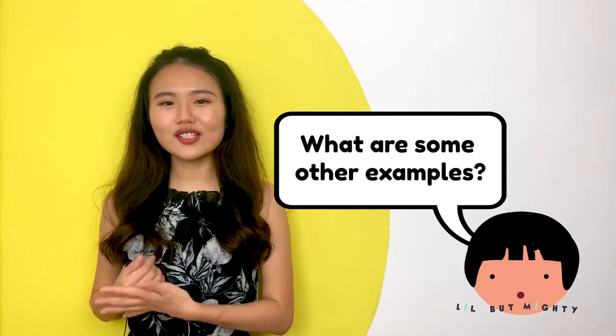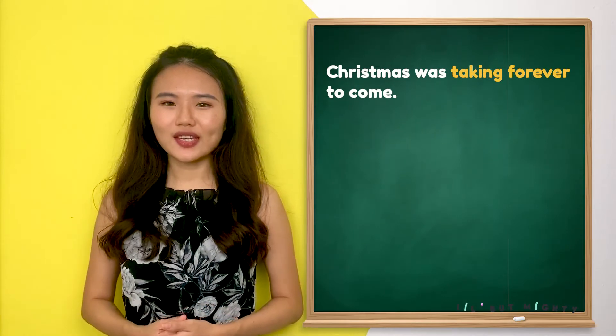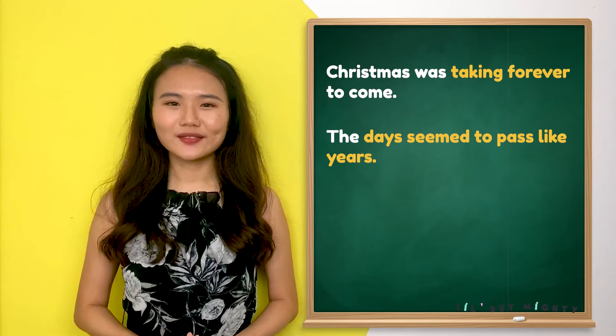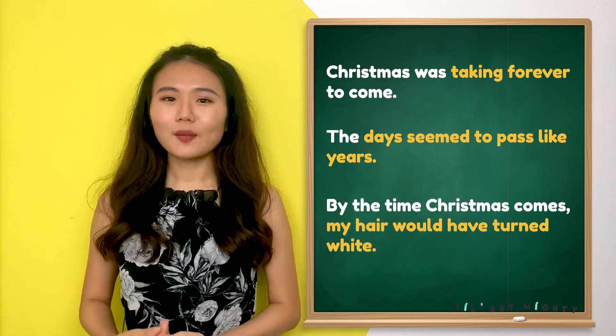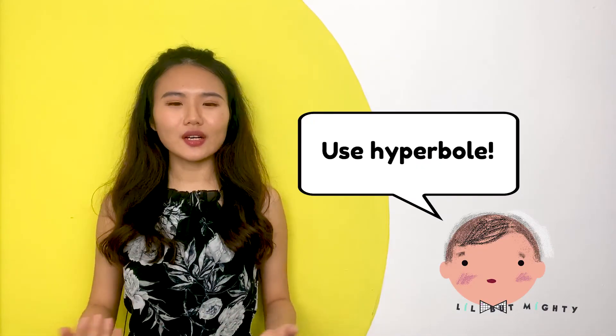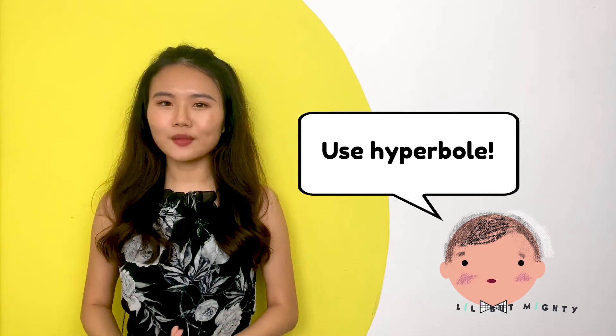Aside from the example I just gave you, what are some other exaggerations you can use to emphasize just how impatient you are? You could say: Christmas was taking forever to come. The days seem to pass like years. By the time Christmas comes, my hair would have turned white. So instead of saying 'I was so impatient,' you can use any of the above hyperboles to make your writing more impactful. This will help your readers understand the full extent of your impatience and also bring a smile to your reader's face.